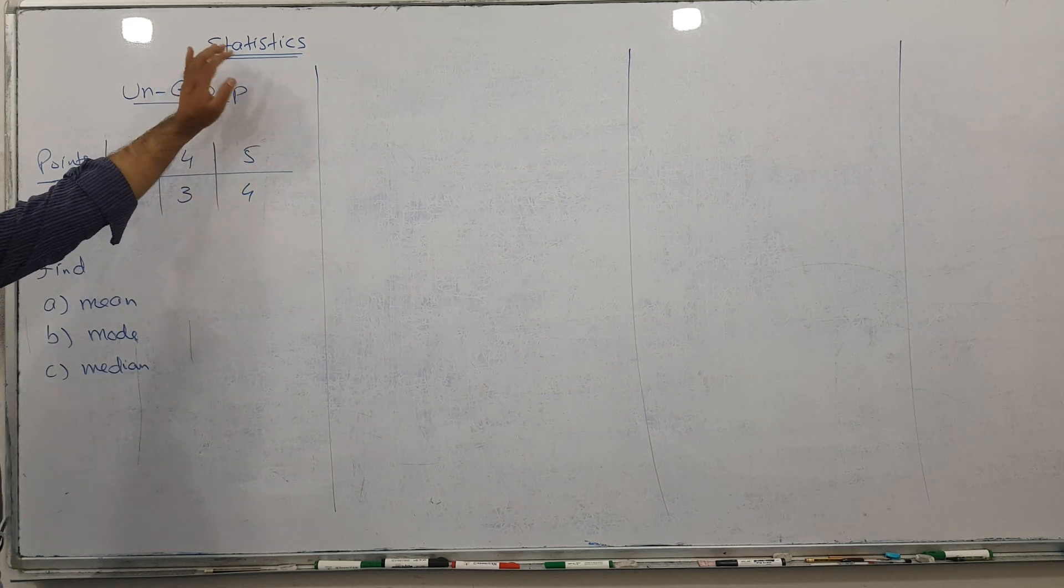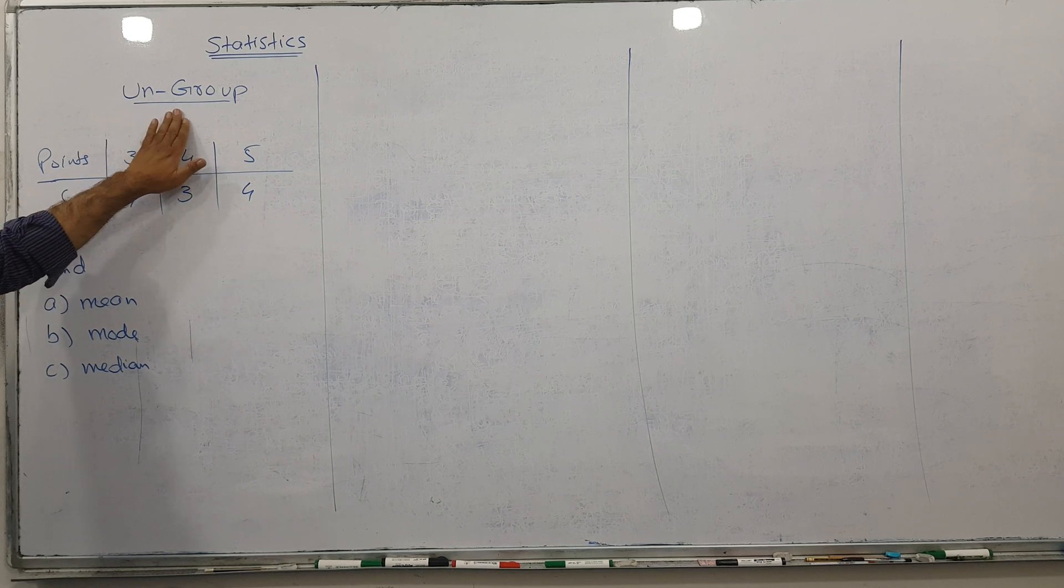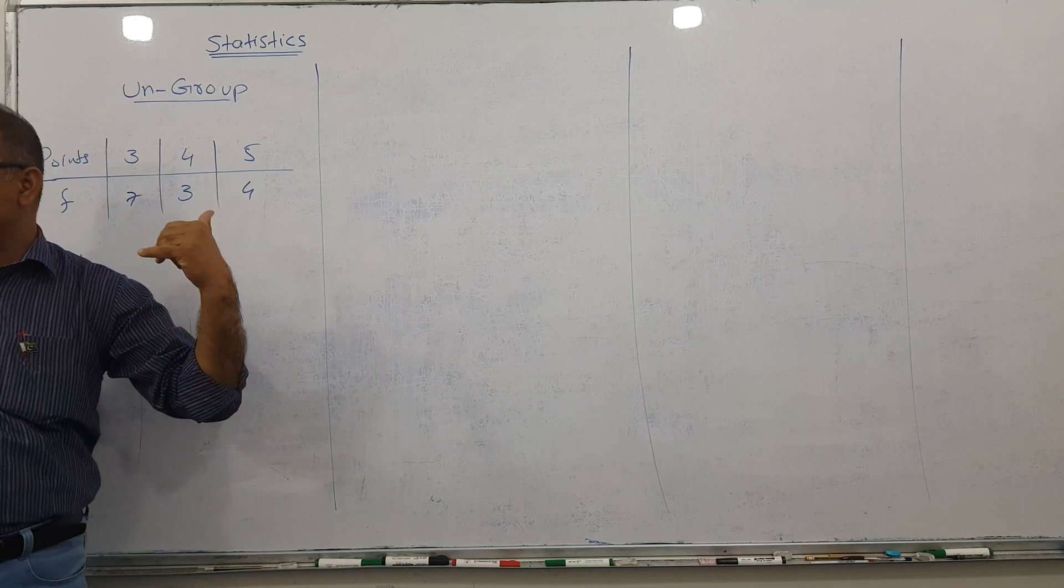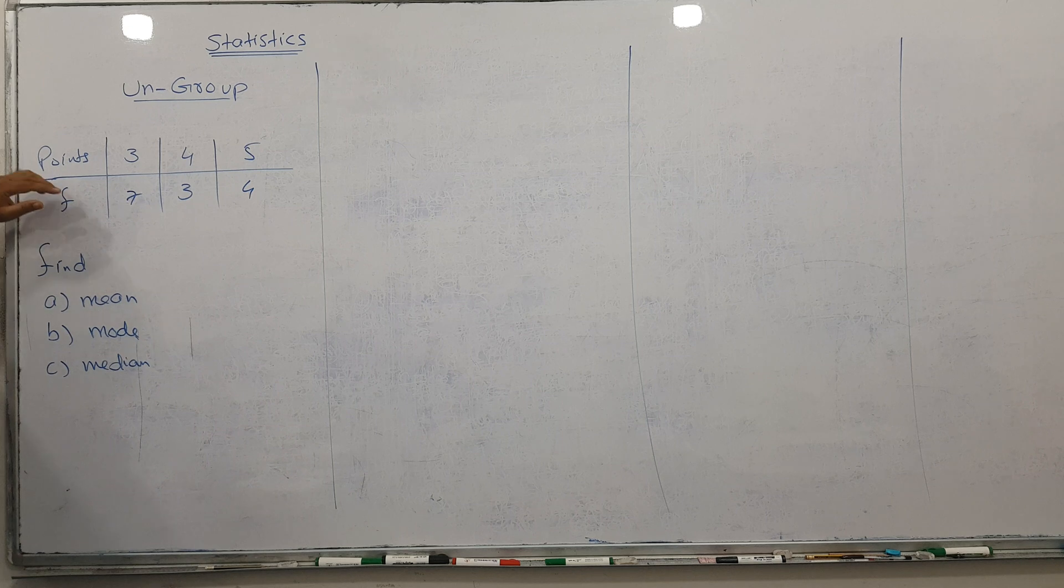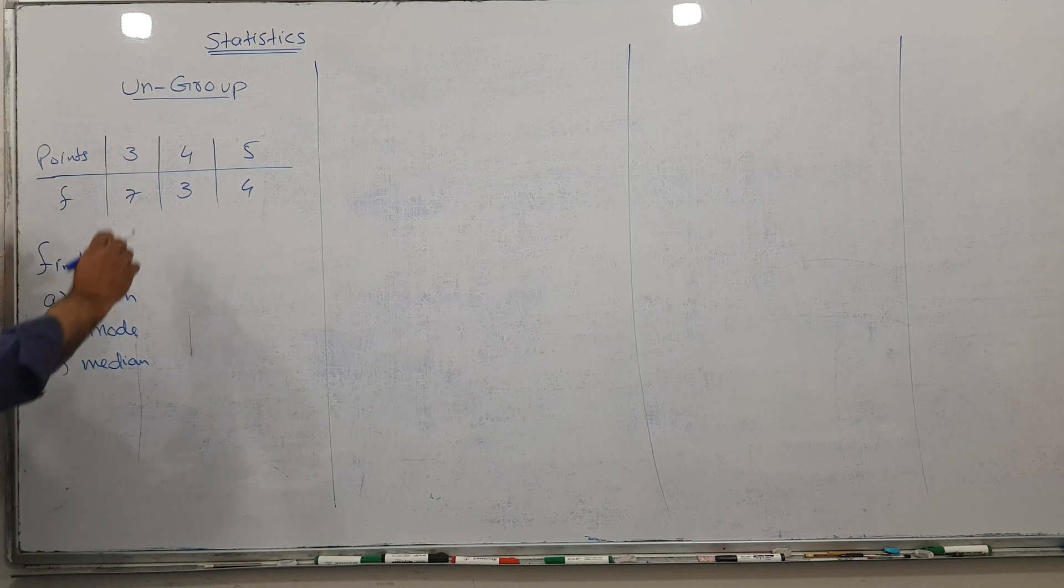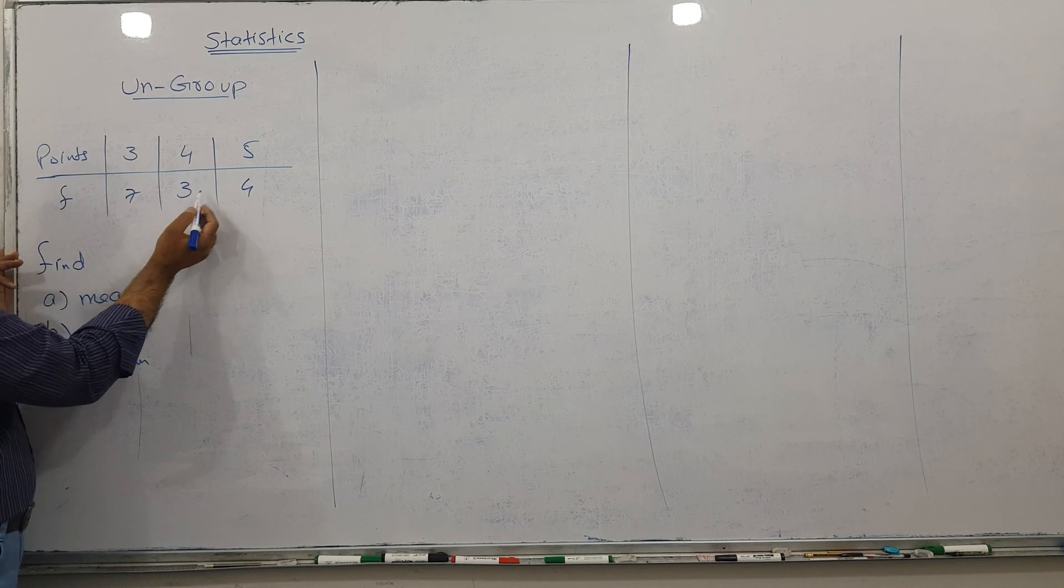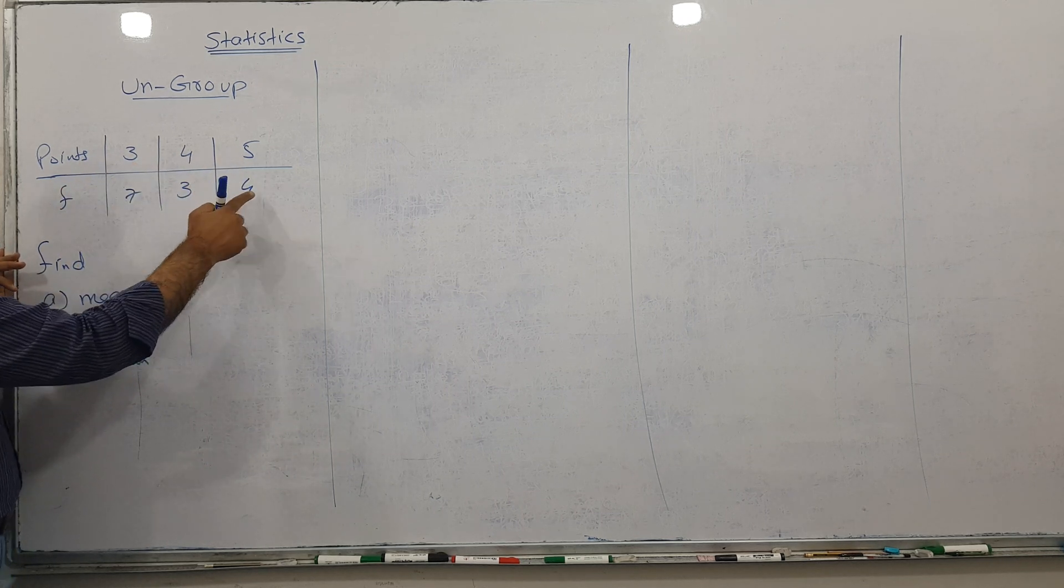This is lecture number two on statistics. I'm discussing raw data and ungrouped data. We have a dataset where 3 repeats seven times, 4 repeats three times, and 5 repeats four times.